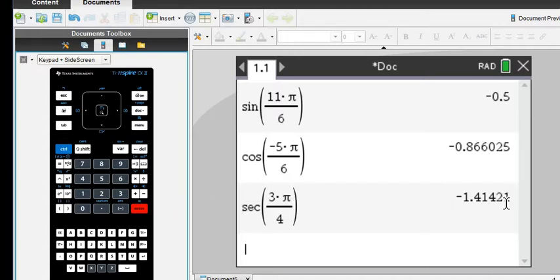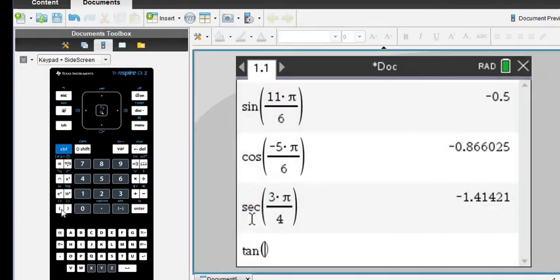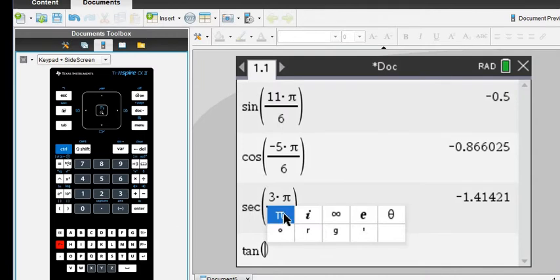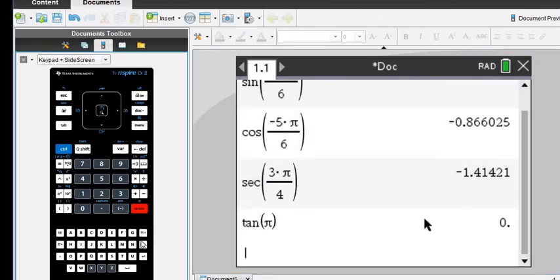If I go to four decimal places, it would go to the 2. Next one is tangent π. We would just go to trig, tangent π, and enter, and it gives us 0.